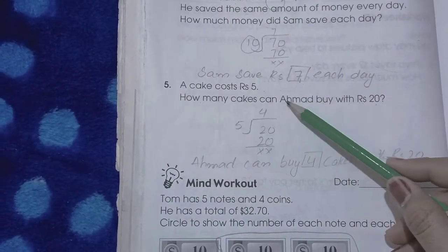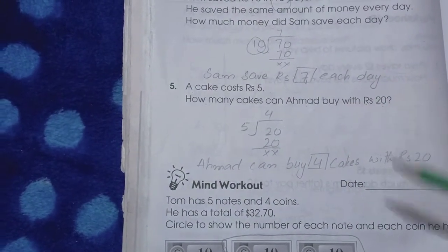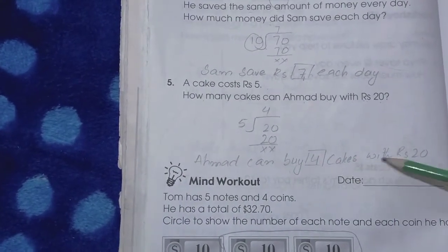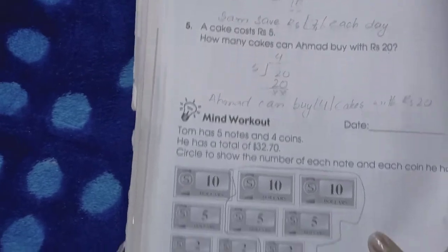A cake costs 5 rupees. How many cakes can Ahmed buy with 20 rupees? Five fours are twenty. Ahmed can buy four cakes with 20 rupees.